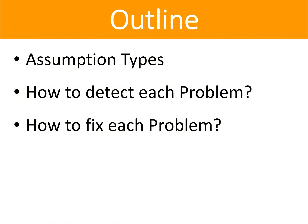In this lesson, I will discuss the 5 most common assumptions of linear regression, which are: linearity, multicollinearity, homoscedasticity, autocorrelation, and normality. Secondly, I will show how to detect the problem, and finally, I will suggest some mechanisms to fix the problems. So stay with me till the end of the discussion.